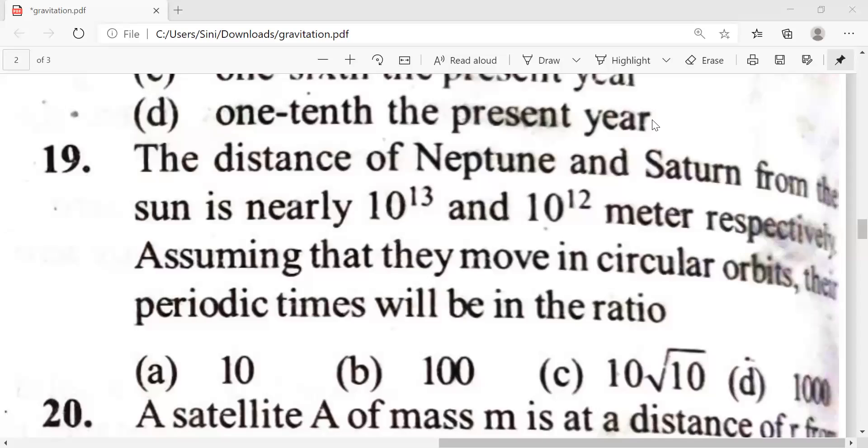So we have to find something like t1 by t2 or t2 by t1. The key point here is Kepler's law.